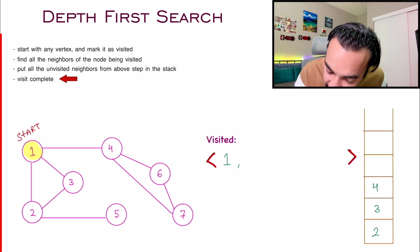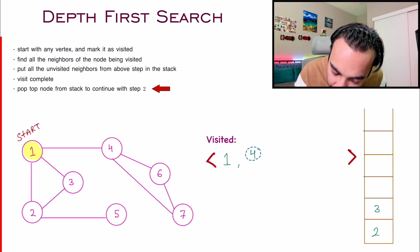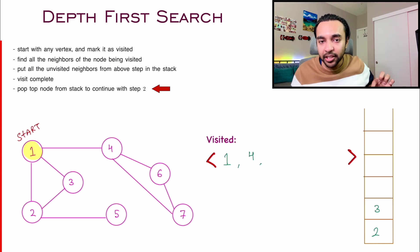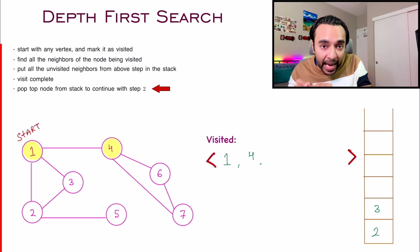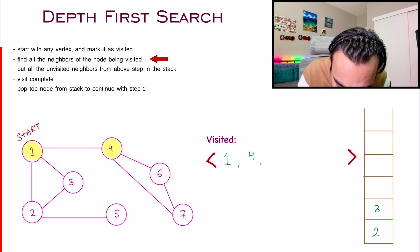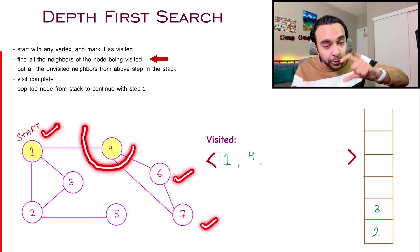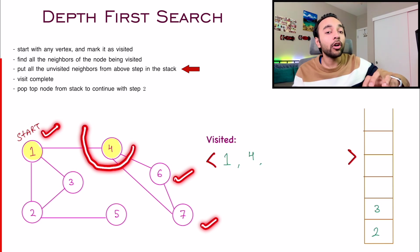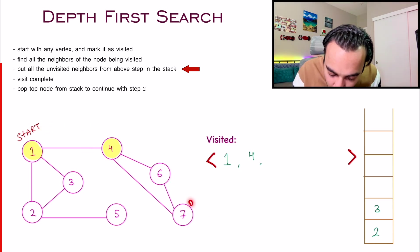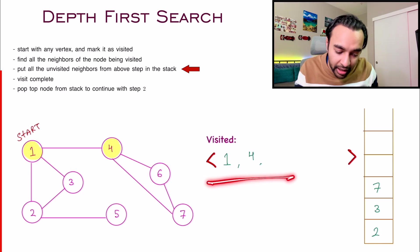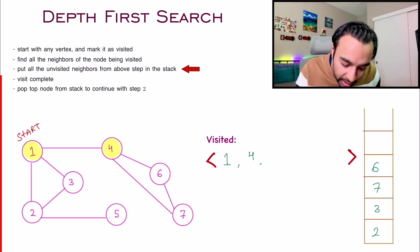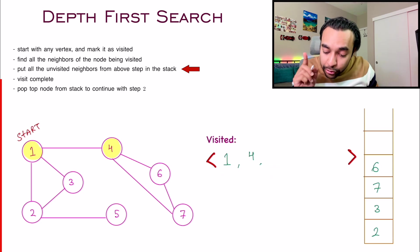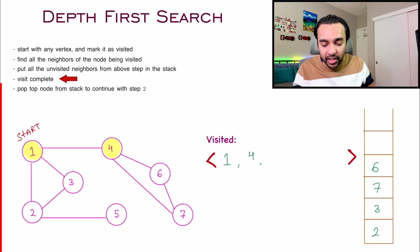To proceed ahead, look at the top of your stack and pop an element. You get node number four. How many neighbors does this node have? It has three neighbors: six, seven, and one again. You will add only those nodes to your stack which you have not yet visited. Node seven has not been visited, so add it. Node six has not been visited, so add it. Node one has already been visited, so do not add it. The visit of node four is now complete.